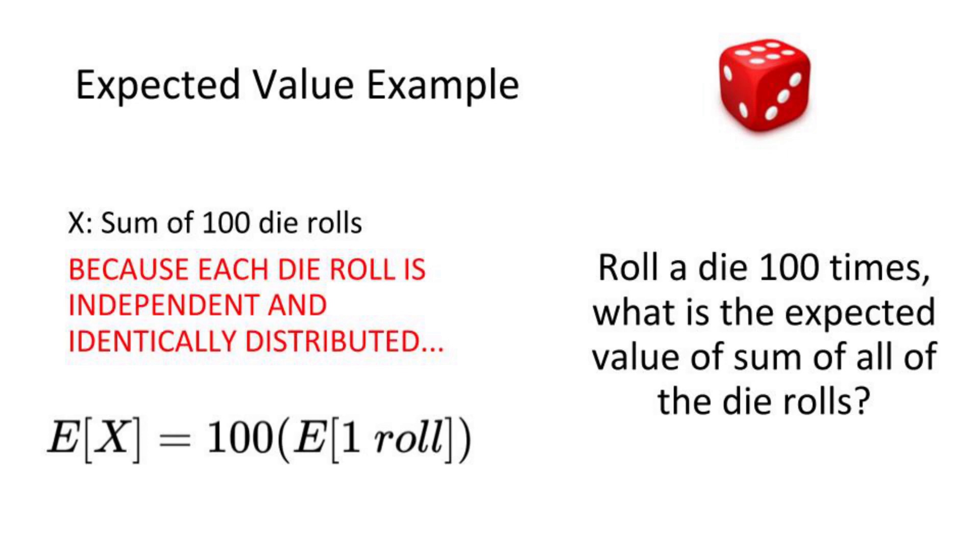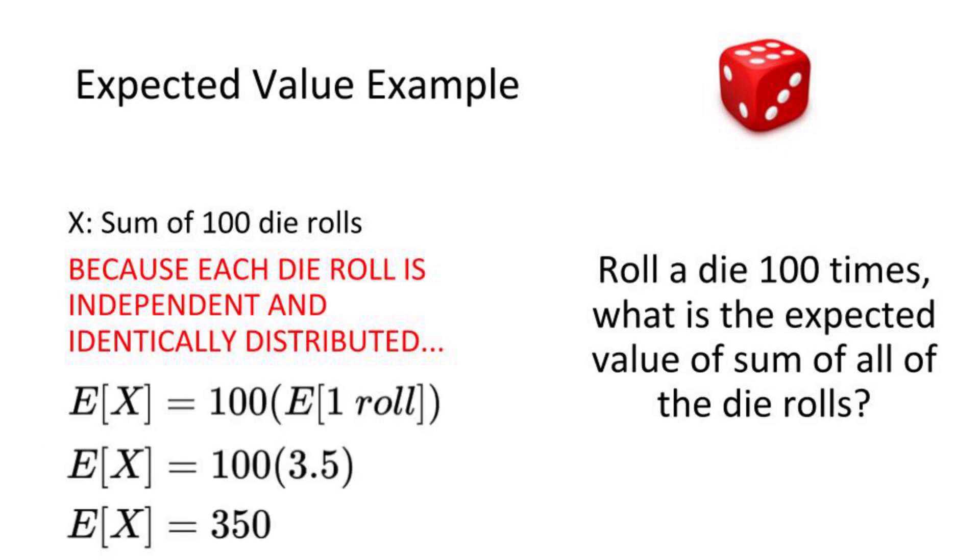Thus the expected value of 100 rolls is really just 100 times the expected value of 1 roll, which is 100 times 3.5, or you expect to get a sum of 350 on average.